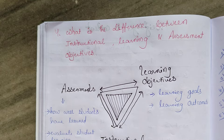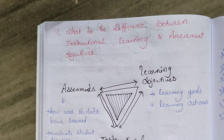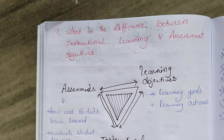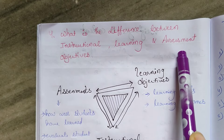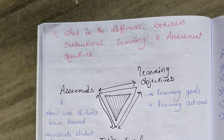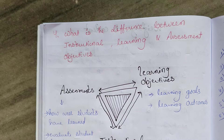Instruction means how to do things and what not to do — how to teach. Learning objective means to get some knowledge or skill; you will learn some knowledge or skill. Assessment means to evaluate — to know how much knowledge the students got, to measure the students' learning outcomes.